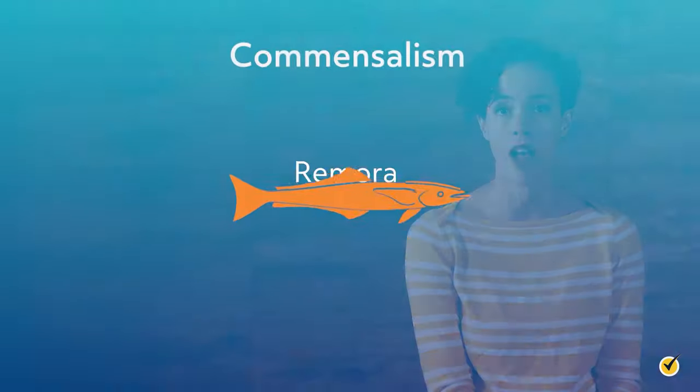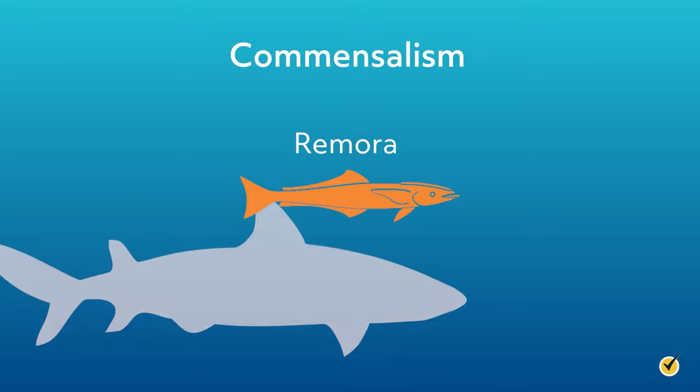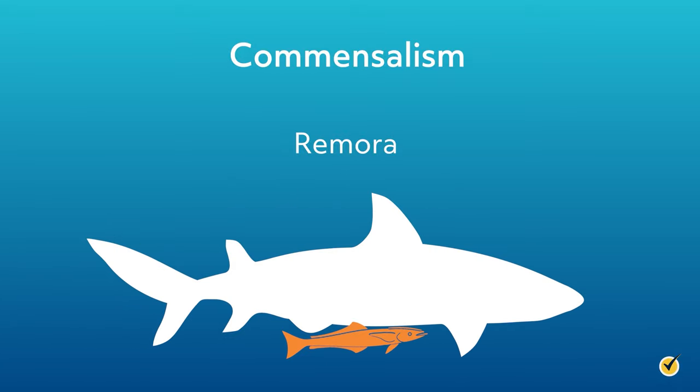Another example of commensalism is one organism using another as a means of transportation. A good example is the remora, a type of sucker fish that will attach itself to sharks and other big fish to catch an underwater ride. This in and of itself is an example of commensalism, since only the remora really benefits. But this relationship can change to mutualism when the remora feeds on the parasites on the backs of these big fish. This leads us to our last type of relationship: parasitism.